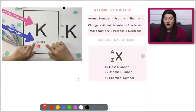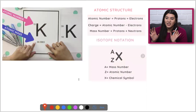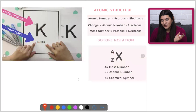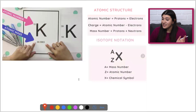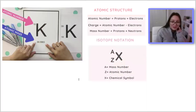That number on the periodic table is actually going to be our atomic mass or atomic weight. Understanding the two differences there is going to be really helpful — I have seen multiple choice questions asking what's the difference.